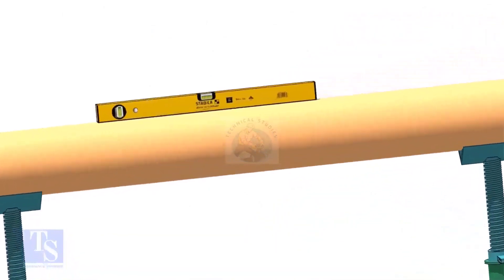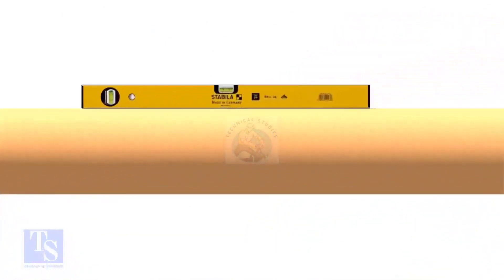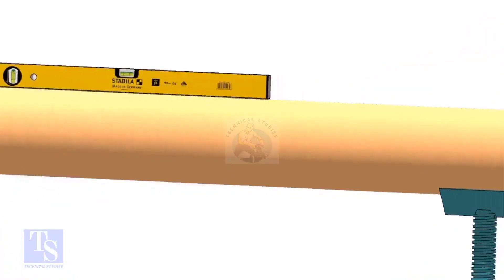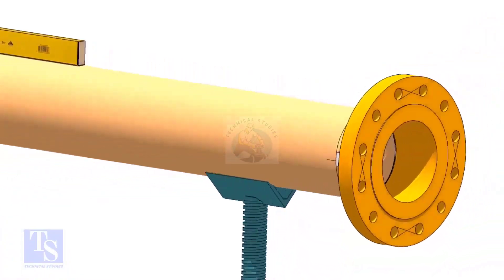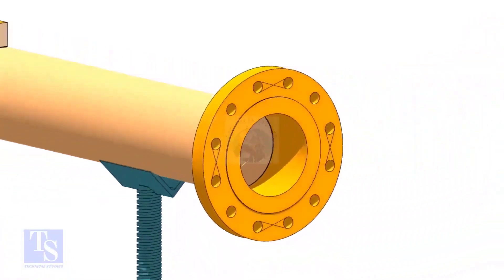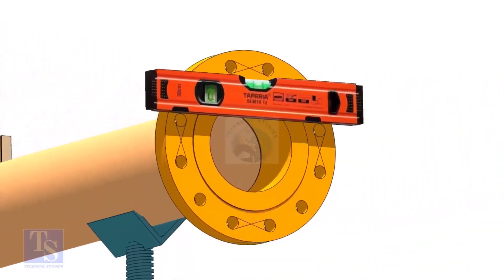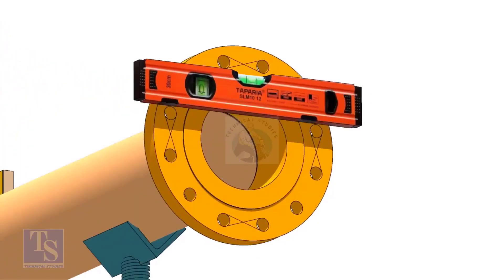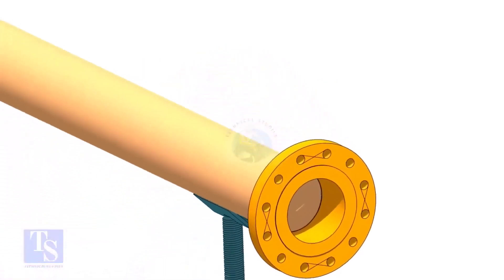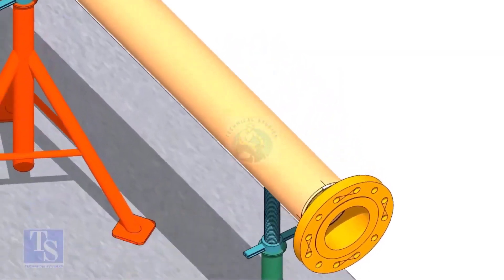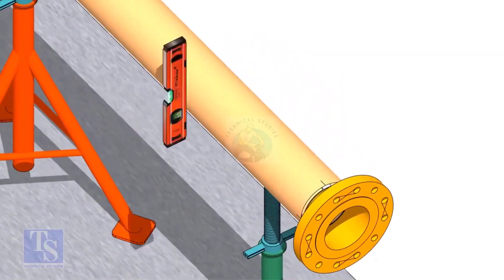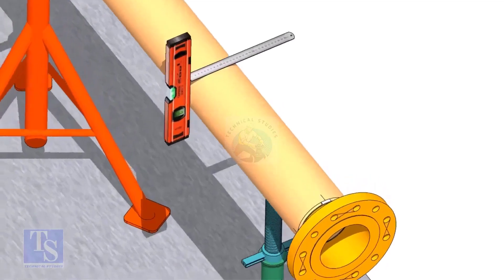Level the pipe and the face of the flange. Choose a point roughly 595mm away from the flange face.